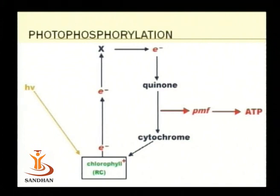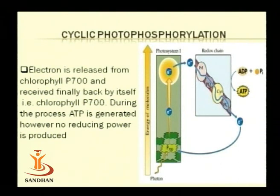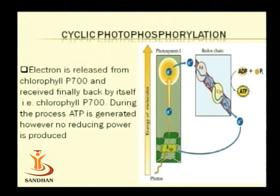This is a general diagram of the process known as photophosphorylation. In photosynthetic bacteria, it is the photochemical reaction coupled with phosphorylation. Depending upon the flow of electrons, we can have two different types: cyclic and non-cyclic photophosphorylation. In cyclic photophosphorylation, the electron removed from photoactivated chlorophyll, after passing through components of the electron transport chain, returns back to chlorophyll. This process involves Photosystem I (P700) and generates ATP, but reducing power is not generated.